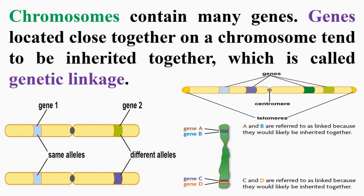Hence, chromosomes contain many genes. Genes located close together on a chromosome tend to be inherited together, which is called genetic linkage, as mentioned in the figures inside the slide.